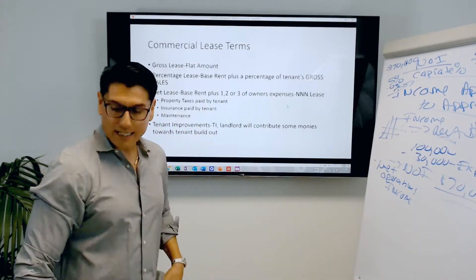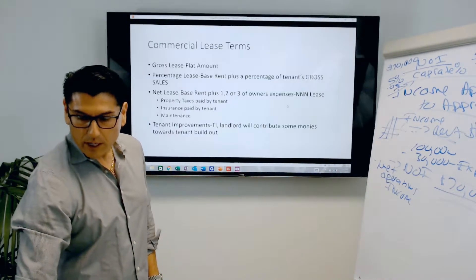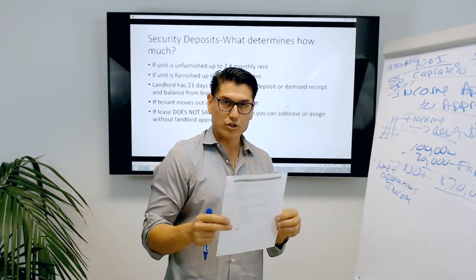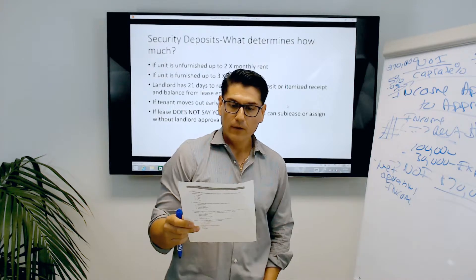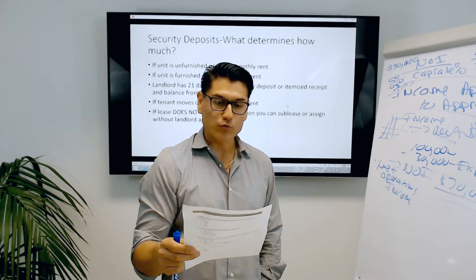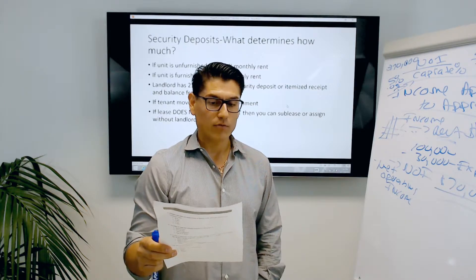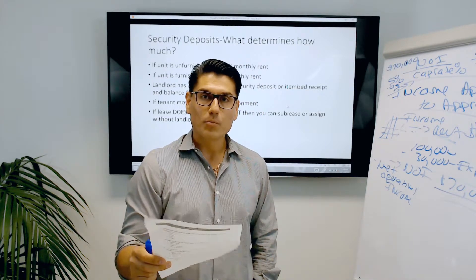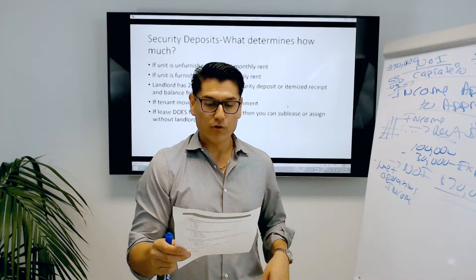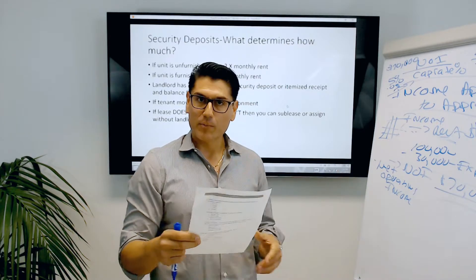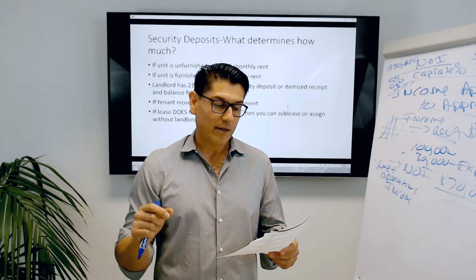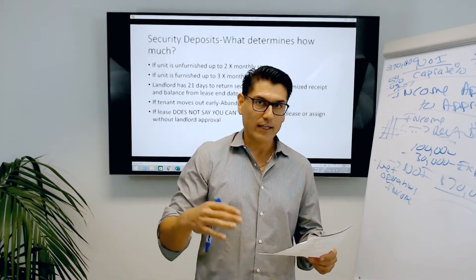Let's go over some quiz questions. Number one: what is the maximum security deposit a landlord of an unfurnished residential apartment can demand? Two months rent. Number two: a commercial lease that involves the tenant's gross sales as part of the rent is referred to as a percentage lease. Number three: a lease in which the tenant pays some of the owner's expenses is referred to as a net lease. Paying all three expenses: triple net; one expense: single net; two expenses: double net.